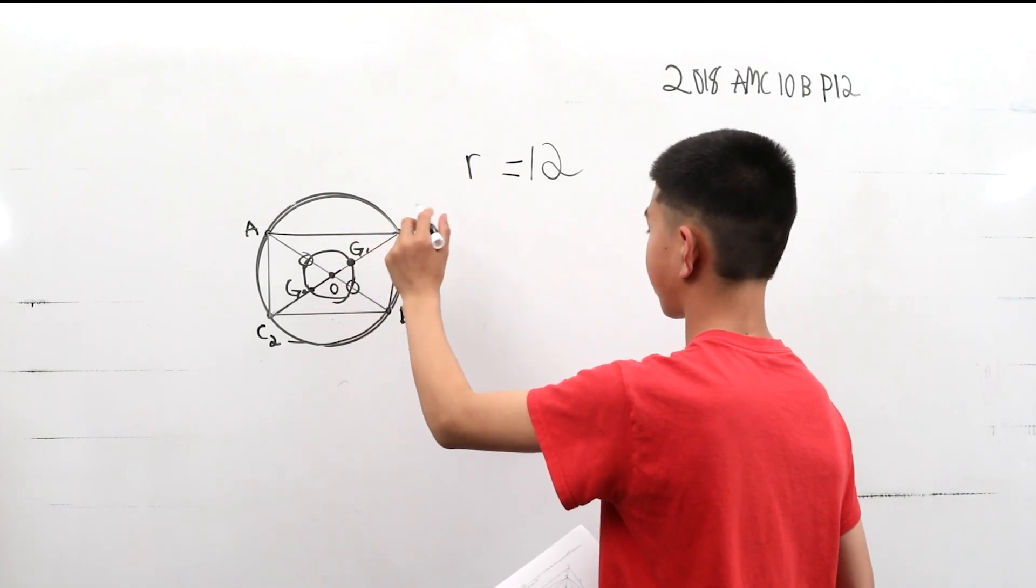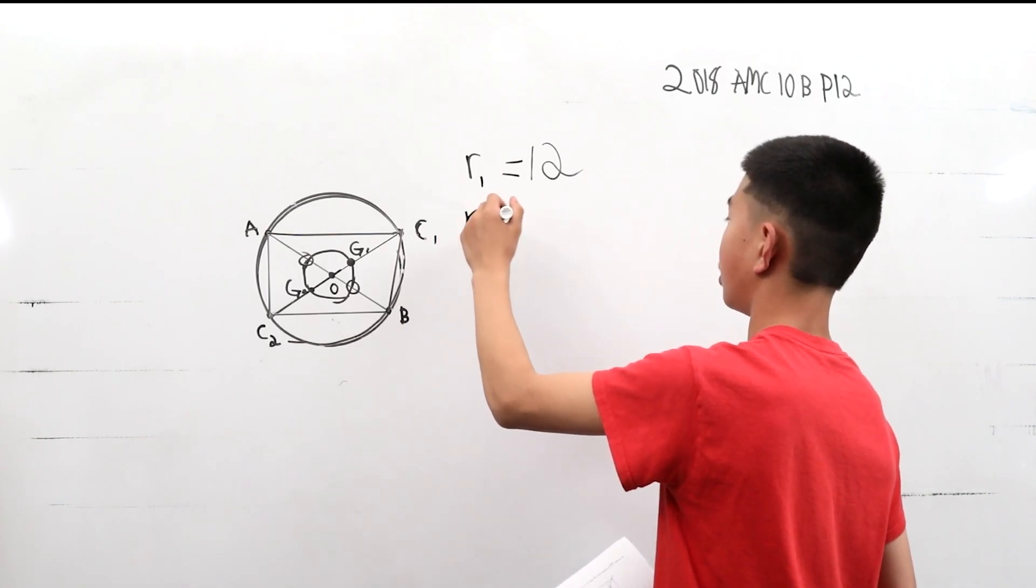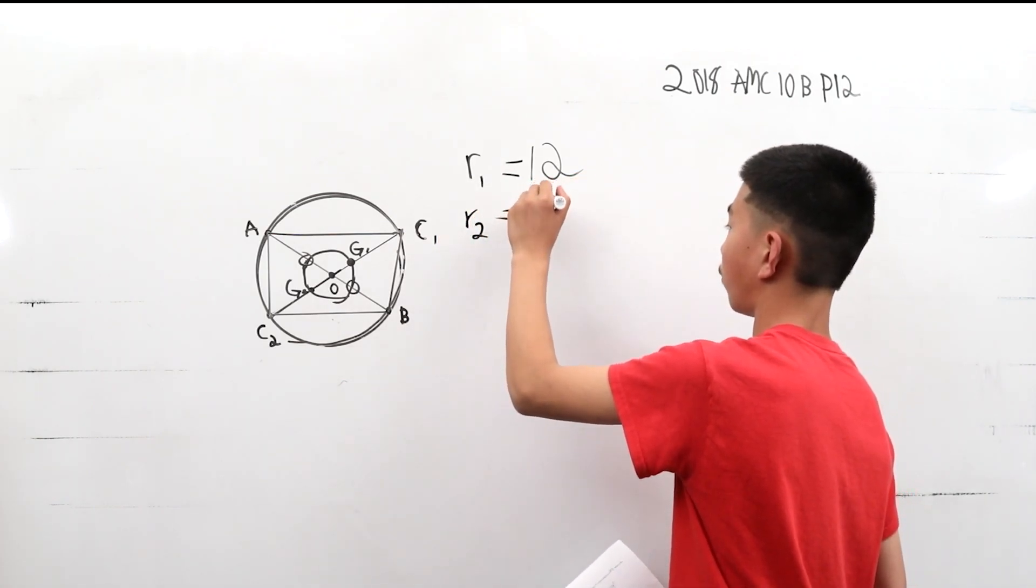So O to G1, the radius of the smaller circle, I'll call radius 1 and radius 2, is 12 over 3, or 4.